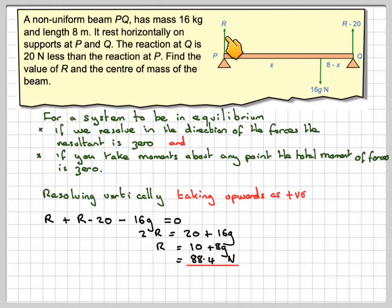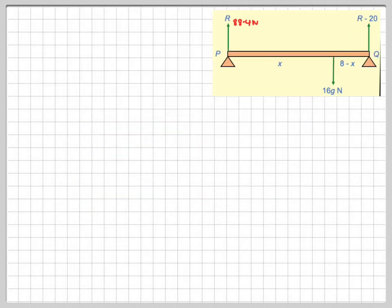So this one is 88.4 newtons, and this is 68.4 newtons because it's 20 newtons less. Now taking moments, we can take moments about any point, but we're going to take moments about point P.